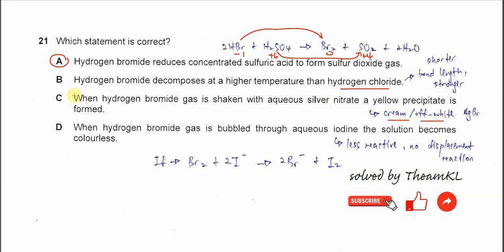Why is D not the answer? When hydrogen bromide gas is bubbled through aqueous iodine, the solution becomes colorless. This is because iodine is less reactive than bromine, so there is no displacement reaction. The iodine will not displace the bromine from the bromide solution, so therefore D is not the answer.